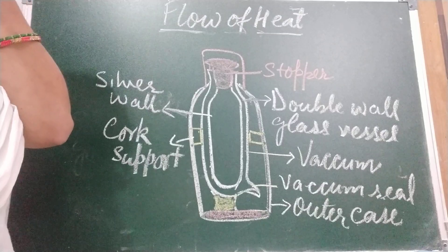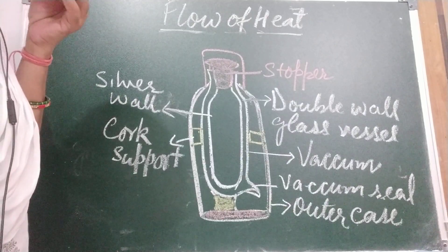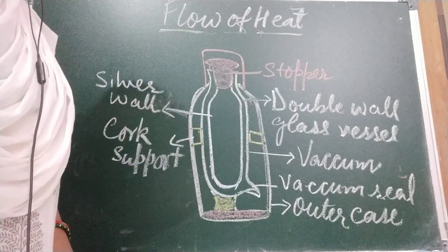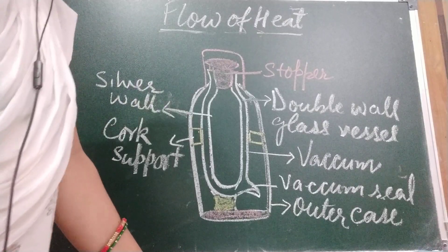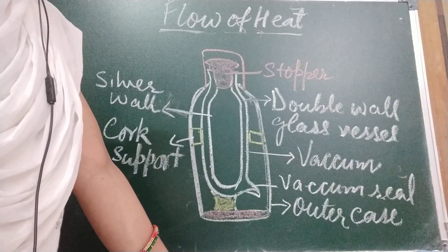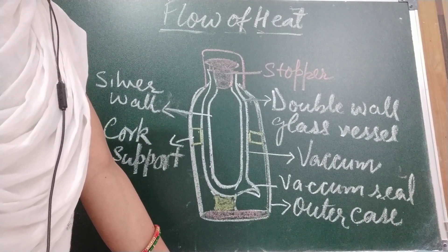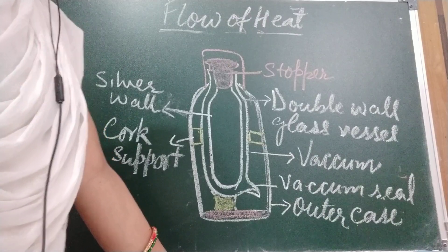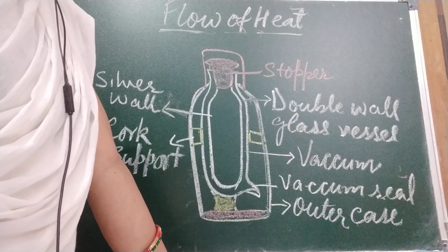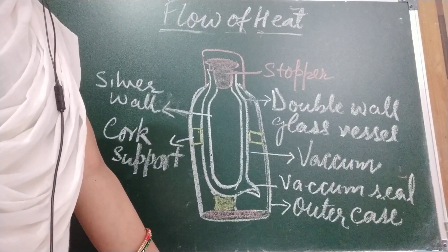Now children we are going to discuss preventing loss of heat in thermos flask. A hot object loses heat to the surroundings by conduction, convection and radiation or by all three means. Similarly a cold object gains heat from the surrounding by these three modes of heat transfer. So to keep a hot body hot or cold body cold we need to reduce the loss or gain of heat respectively due to these three modes. A thermos flask is a household item that is used to keep things warm or cold for a long time. It consists of double walled glass.